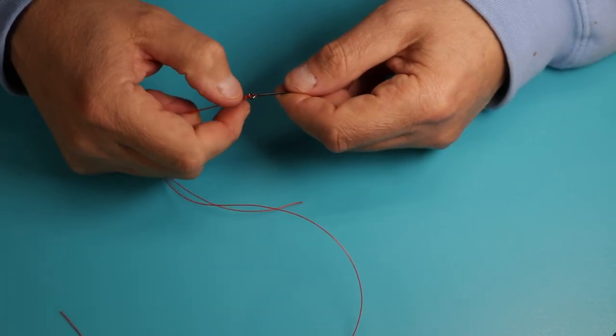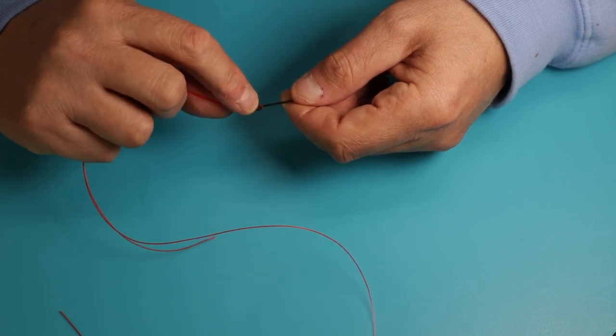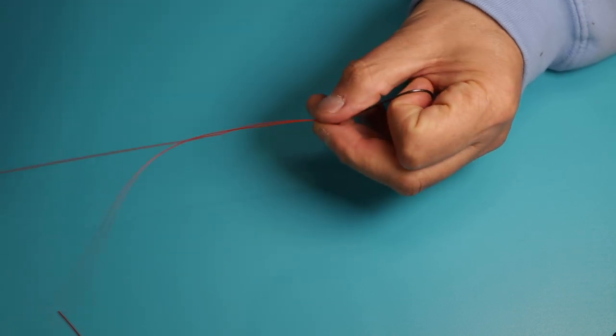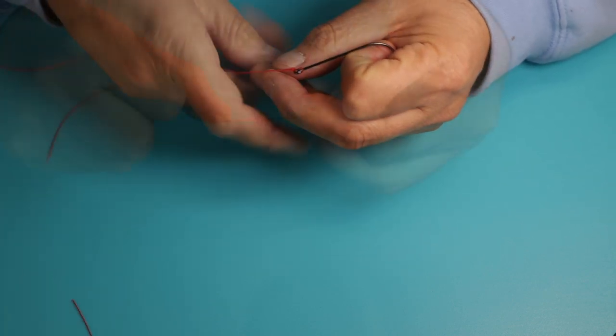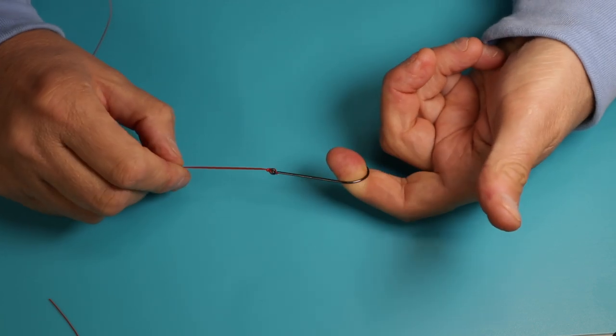The beauty of this knot is any chance of slippage is counteracted by the turn around the item that you're tying to. So this is a very strong knot. It retains the majority of its line strength, and that is the Palomar knot.